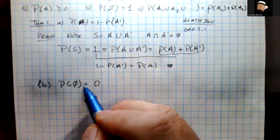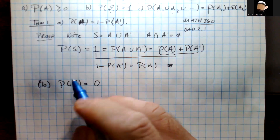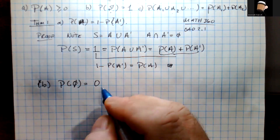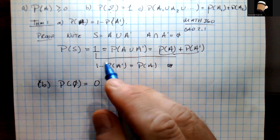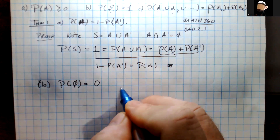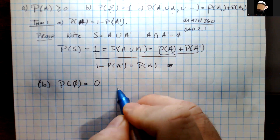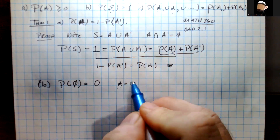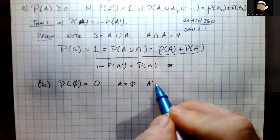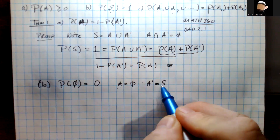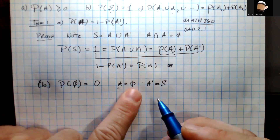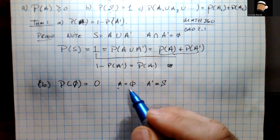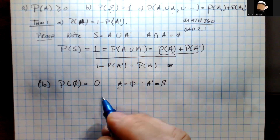This is part B: we want to show that the probability of the empty set is equal to zero. This is nice because we make the observation from part A: if we let A equal the empty set, then A-complement equals S. By definition, the complement of the empty set is everything that's in the set S.